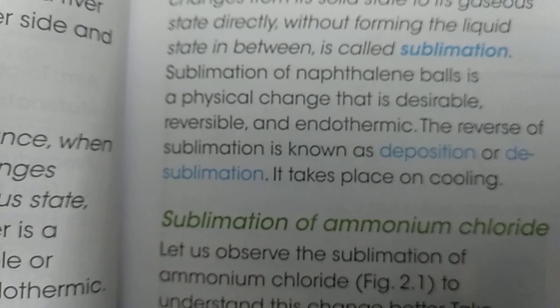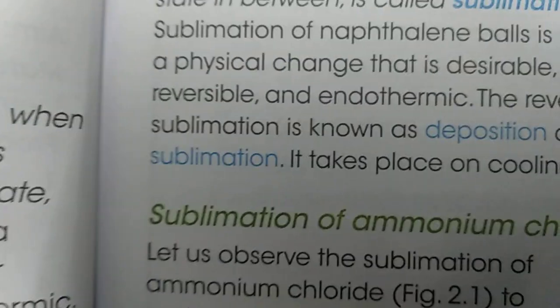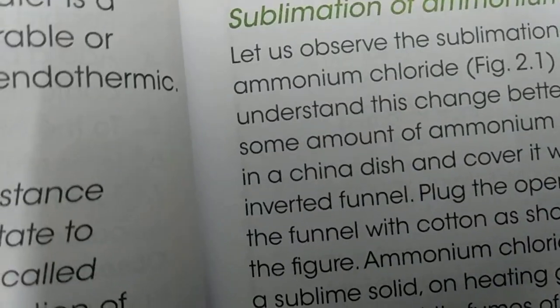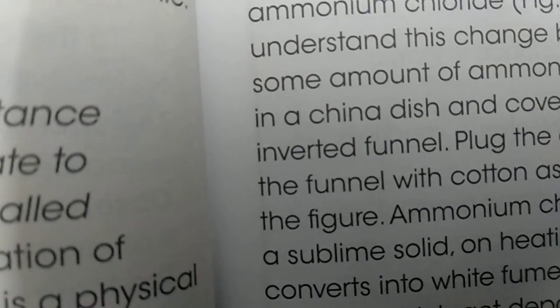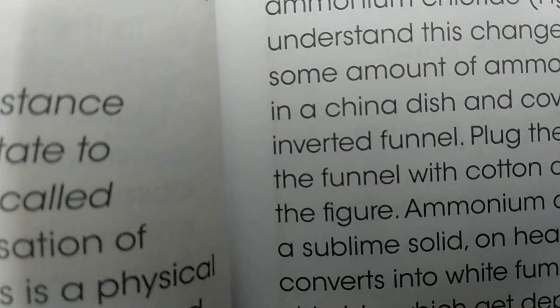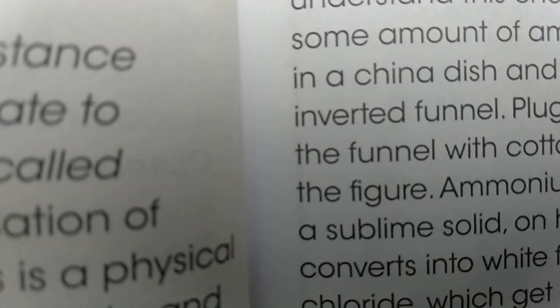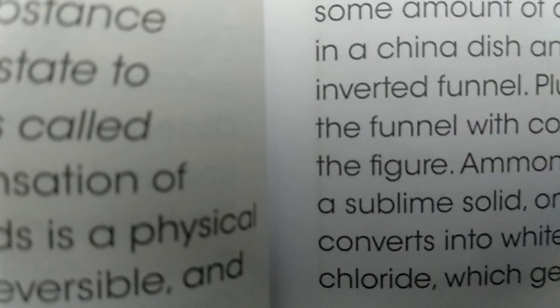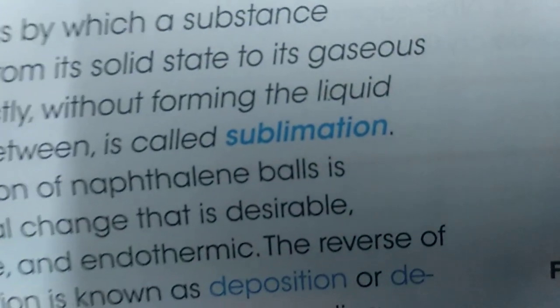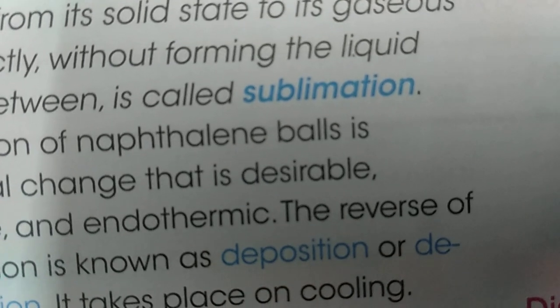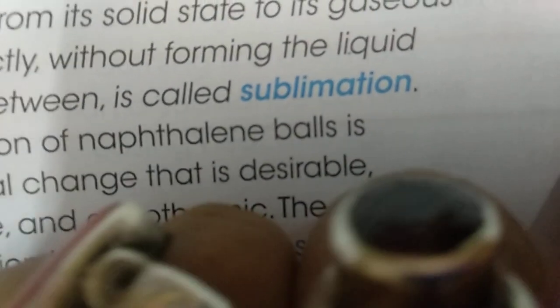Here we will see ammonia chloride sublimation. When we take some amount of ammonia chloride in a China dish and cover it with an inverted funnel, and plug the opening of the funnel — that means we put a cotton plug on the funnel opening. Now we are burning and heating it.